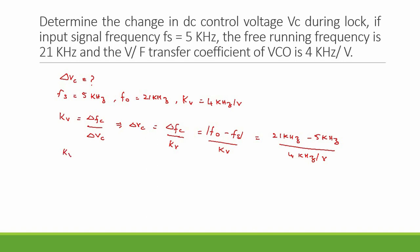For us we have 21 kHz minus 5 kHz divided by Kv value is 4 kHz per volt. So what we have is 16 kHz divided by 4 kHz per volt. 16 divided by 4 gives me 4.